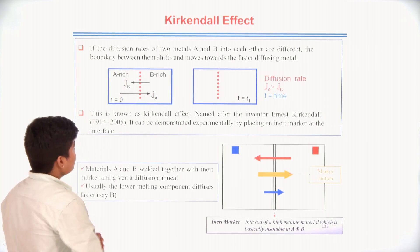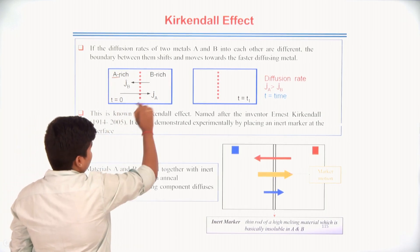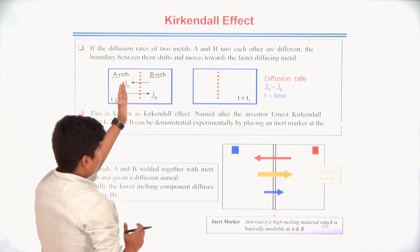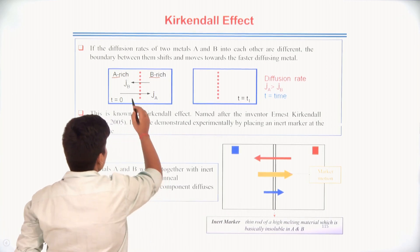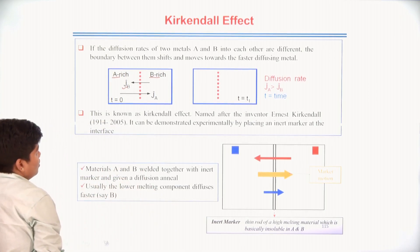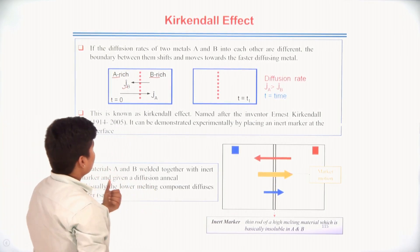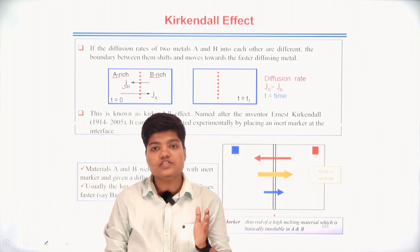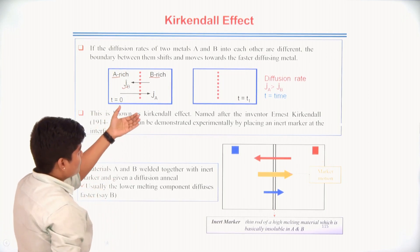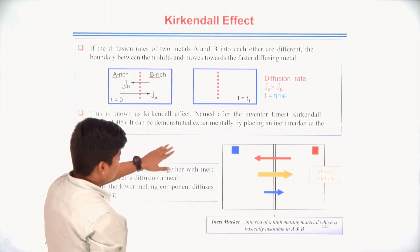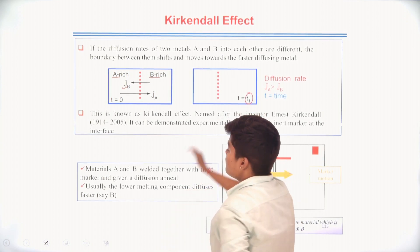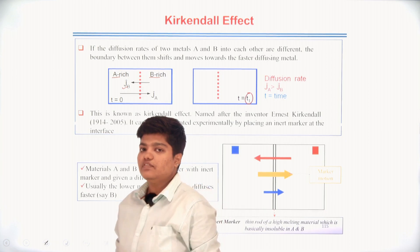From this diagram you can see that A is one metal and B is another metal, present far apart from the boundary. J_B is the diffusion rate of metal B and J_A is the diffusion rate of metal A. Let us suppose the diffusion rate of A is more than that of B. Initially they are at some position; after diffusion, at time interval T1, the boundary shifts towards the most rapidly moving species.